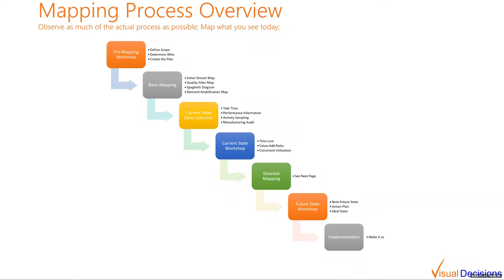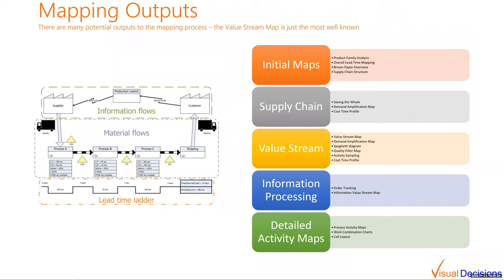The final step — to make it so — is to implement the proposed changes. While the value stream map itself is a key part of the process, there are actually many outputs from a complete mapping project. The list on this page is by no means comprehensive; it's simply a view of some of the most common outputs. Sorry for the small print, but there are a lot of them.